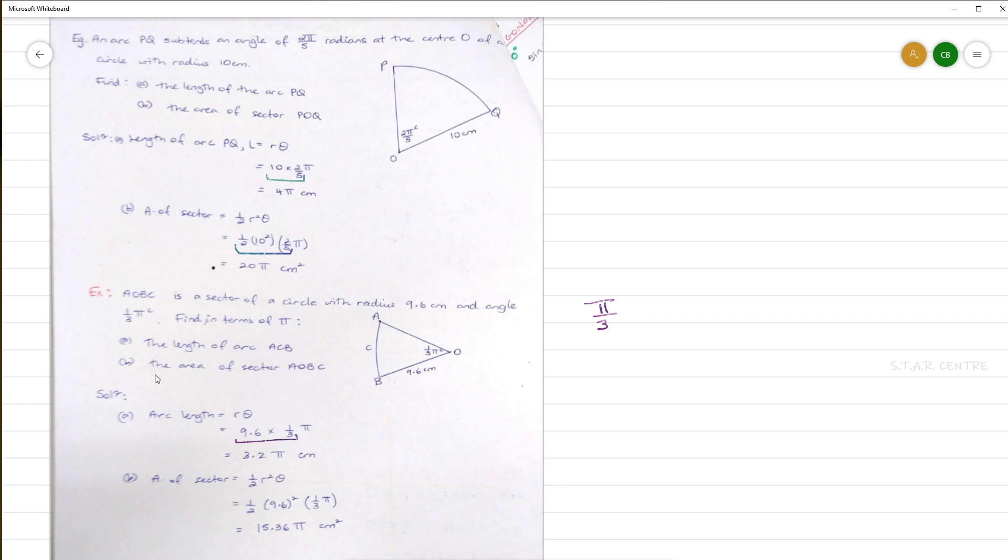The second part of the question is asking us to find the area of sector AOBC. To calculate the area, we are using the formula 1/2 r² θ, substituting our values for r and θ. And again, we are simplifying just this part of it and leaving our final answer in terms of π. So we would get 15.36π cm squared.